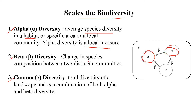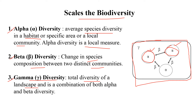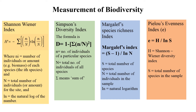Beta diversity is the inter-community diversity — the changes in species composition between two distinct communities. If you have two communities, beta diversity measures what changes occur in species diversity or species composition between them. Gamma diversity is the largest concept — it is the total diversity of a landscape, where gamma equals alpha plus beta. So gamma diversity is a combination of both alpha and beta diversity.